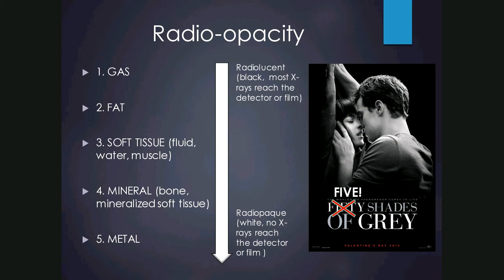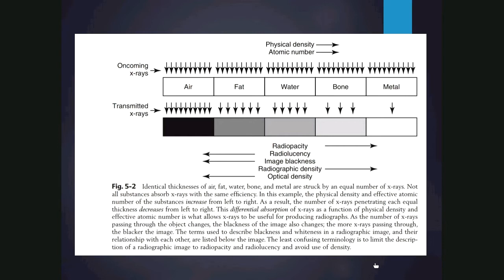The reason for different radiopacities is that the physical density and atomic number of air, fat, water, bone, and metal increases from left to right. Air, because of its low density and low atomic number, allows most X-rays to transmit and reach the detector, resulting in a black image. Fat transmits most X-rays but less so than air. Water even less. Bone transmits fewer still, and metal — being the densest with the highest atomic number — transmits the least, effectively blocking the X-ray and resulting in a white image.